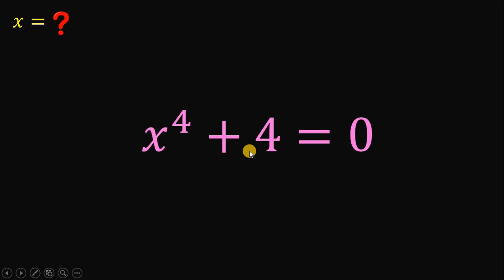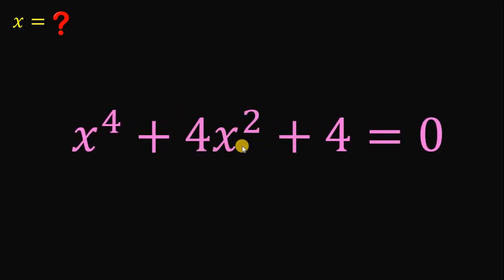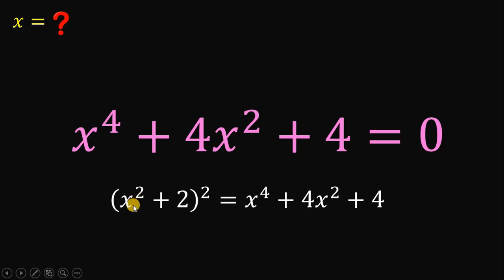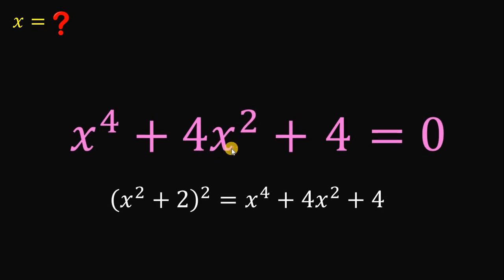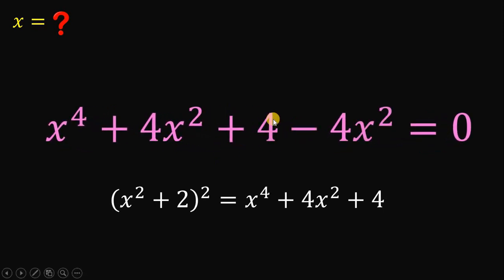What if there is a term for x squared in this equation? x to the fourth power plus 4x squared plus 4 is definitely factorable, because this is the result when we expand (x squared plus 2) quantity squared. But we don't really have 4x squared in our original equation, so we balance it by subtracting 4x squared — the 4x squared and negative 4x squared cancel out, and our equation remains x to the fourth power plus 4.